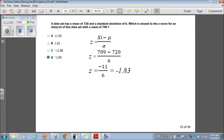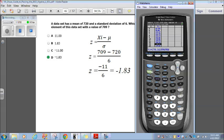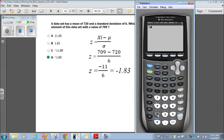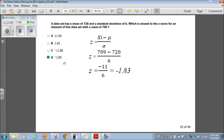Question 43. A data set has a mean of 720 and a standard deviation of 6, which is closest to the Z score for an element of this data set with a value of 709. Now, from your statistics unit, you should remember to find the Z score, the formula is Z equals X sub I, which is your data set, minus your mu, which is your mean, divided by sigma, your standard deviation. So, the data set, the value is 709. So, it equals 709 minus the mean. The mean is 720. So, 709 minus 720 divided by the standard deviation. They say the standard deviation is 6. So, 709 minus 720 is negative 11. So, negative 11 divided by 6. If I do that on calculator, negative 11 divided by 6, negative 1.83, which is answer choice D. That's how we find the Z score.